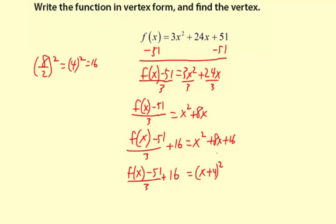And now we can get into simplifying the left-hand side. First, I'm going to subtract 16 from both sides. I have f of x minus 51, all divided by 3, and then we're subtracting 16, so that's going to equal x plus 4 quantity squared minus 16.